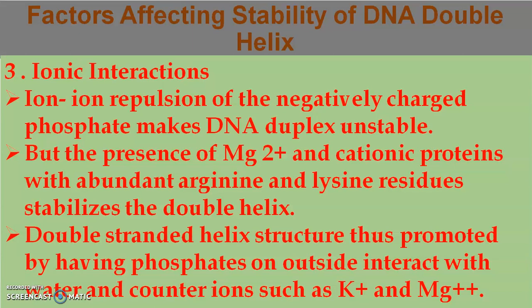The third factor is ionic interactions. Ion-ion repulsion of the negatively charged phosphate groups makes the DNA double helix unstable. However, the presence of Mg²⁺ ions and cationic proteins with abundant arginine and lysine amino acid residues can stabilize the DNA double helical structure. The phosphate groups on the outside interact with water molecules and counter ions such as potassium ions and Mg²⁺ ions.